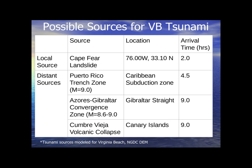There are also distant sources that could cause significant tsunamis. The Puerto Rico Trench zone — the deepest area in the Atlantic Ocean — if it had a magnitude 9.0 or higher earthquake, it could send a significant tsunami up the U.S. coast, arriving in about four and a half hours. The Azores and Gibraltar, if hit by an 8.6 to 9.0 earthquake, could cause another significant tsunami arriving in about nine hours. The Cumbre Vieja volcanic islands and the Canary Islands — if one collapsed or erupted — would also take nine hours, giving us plenty of time to prepare.